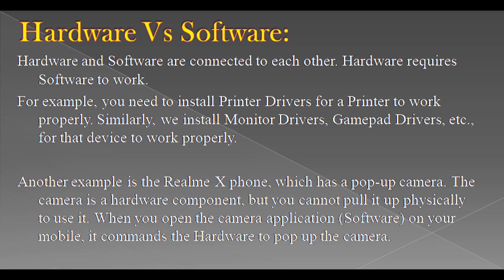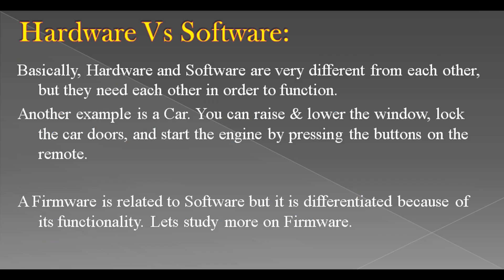Another example is the Realme X phone, which has a pop-up camera. The camera is a hardware component, but you cannot pull it up physically to use it. When you open the camera application on your mobile, it commands the hardware to pop up the camera. Basically, hardware and software are very different from each other, but they need each other in order to function. Another example is a car — you can raise and lower the window, lock the car doors, and start the engine by pressing buttons on the remote. Firmware is related to software but is differentiated because of its functionality.